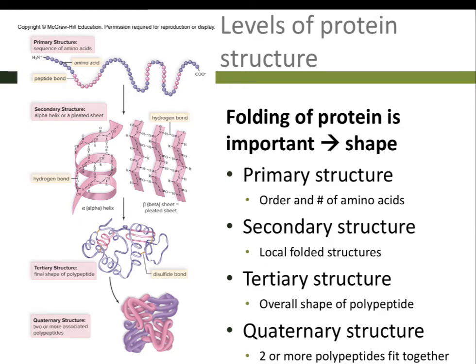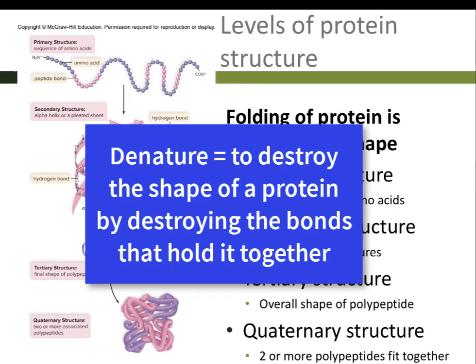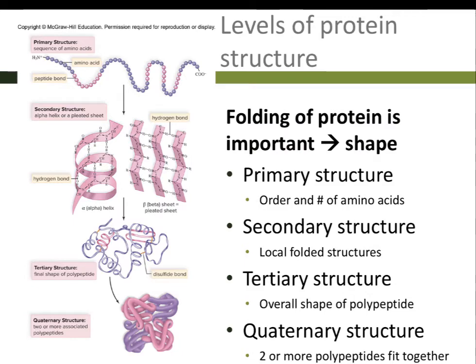Proteins are very important in the body. One of the things that allows proteins to do so many things is that they have a very specific shape. If a protein loses its shape — if you heat it up or treat it with too many chemicals — you will denature the protein, disrupting its shape. The protein won't do its job anymore if its shape has been disrupted. This is why a very high fever can be dangerous — it can denature the proteins in your body.